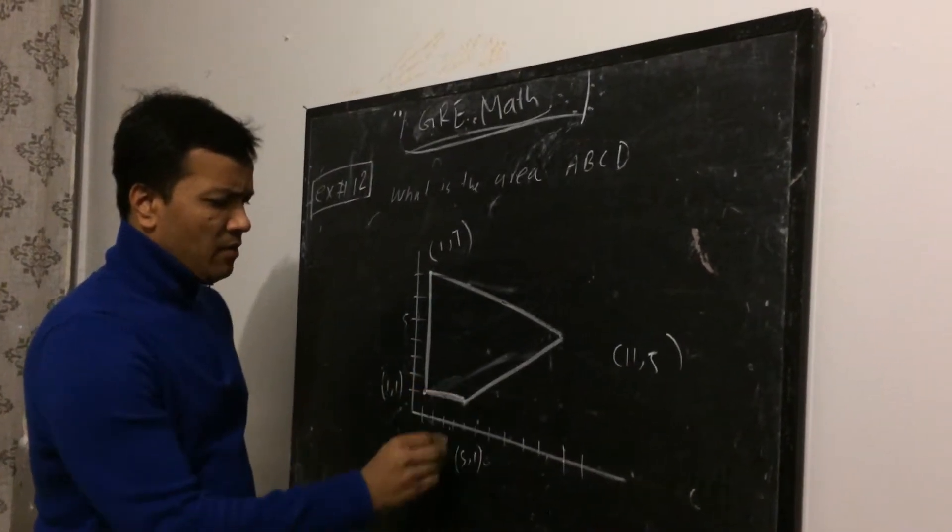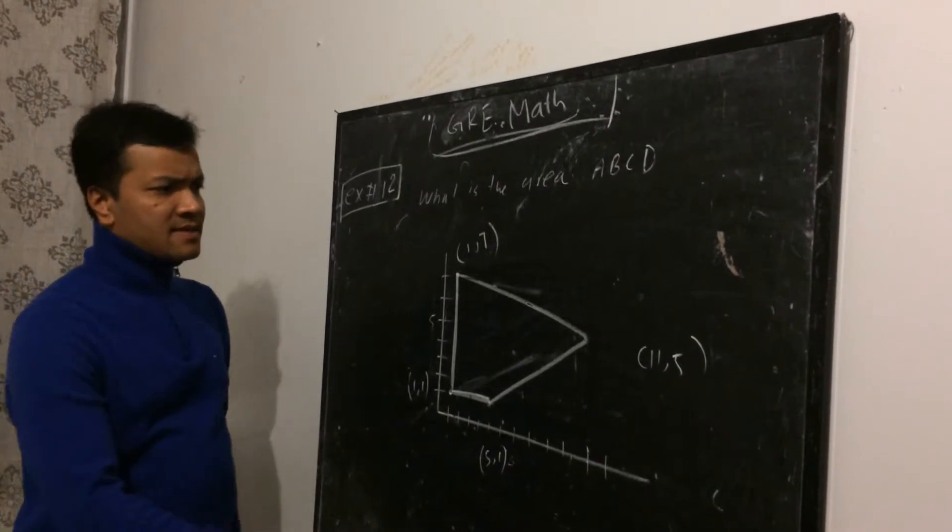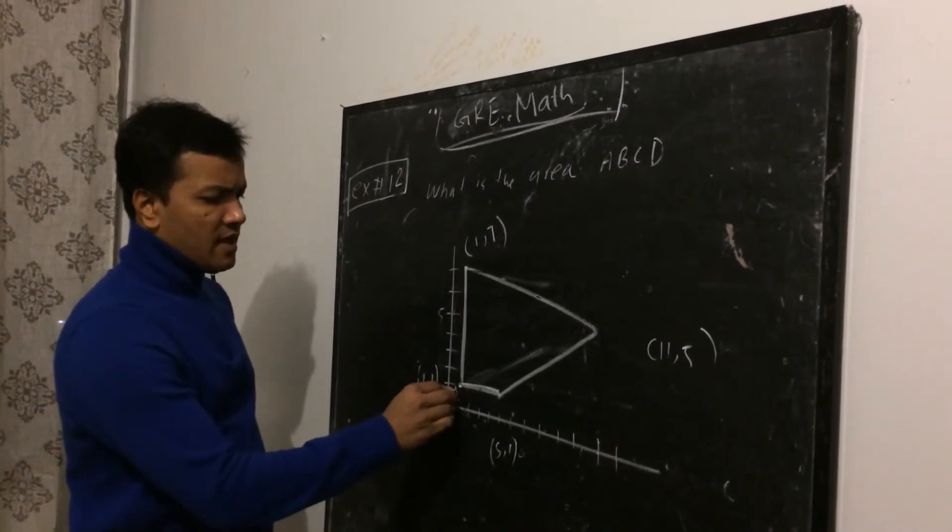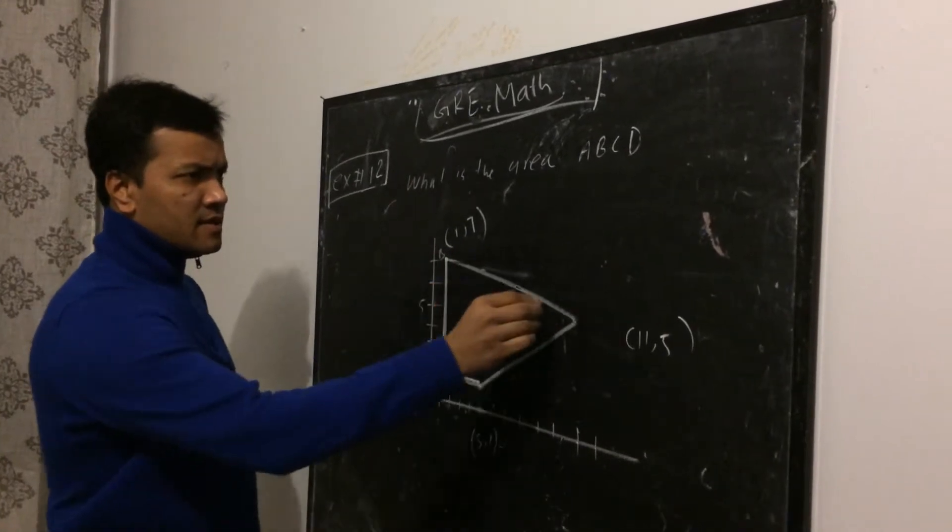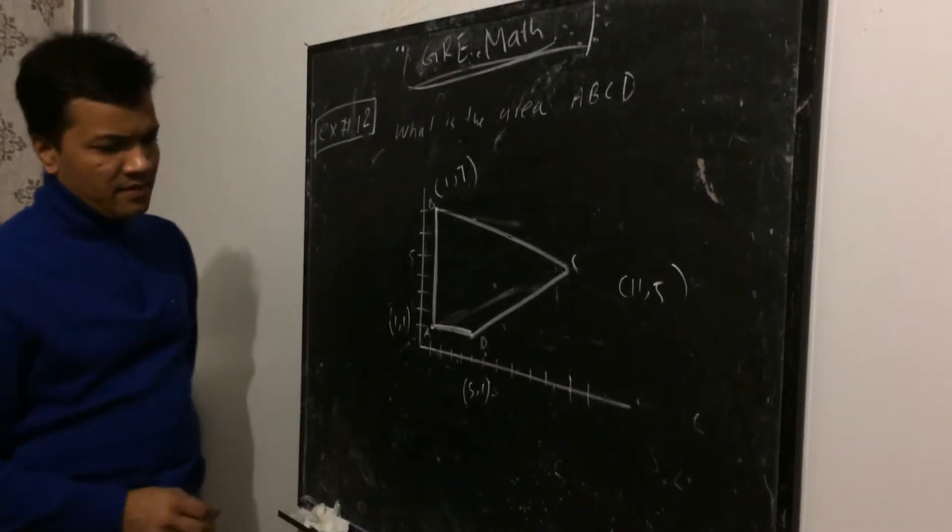Another GLE math problem. What is the area of A, B, C, D? So this is a quadrilateral. So this is A, B, C, D. So what is the area of this guy now?